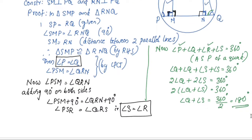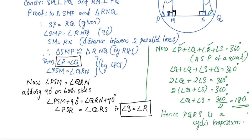Then, opposite angles sum to 180 degrees. Hence, PQRS is a cyclic trapezium. PQRS is a cyclic trapezium, where the cyclic condition gives sum equal to 180 degrees.